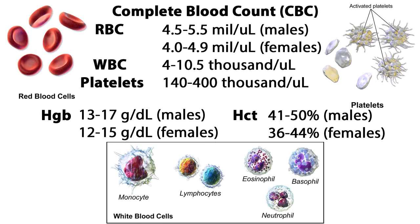A complete blood count, or CBC, gives an overview of a patient's general health status by providing information about the cells in a patient's blood. It includes red blood cells (RBCs), white blood cells, platelets, hemoglobin, and hematocrit.